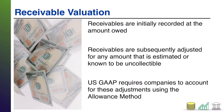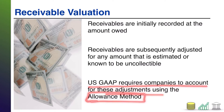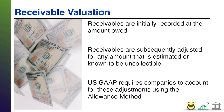U.S. GAAP requires companies to use what is known as the allowance method of doing these bad debt estimations. The alternative is the direct write-off method — that is actually not allowed under U.S. GAAP — so the focus of this video will be on the allowance method. You will see where that name comes from in just a moment.